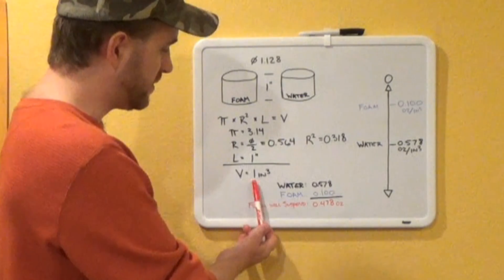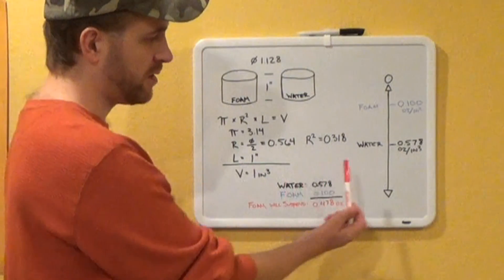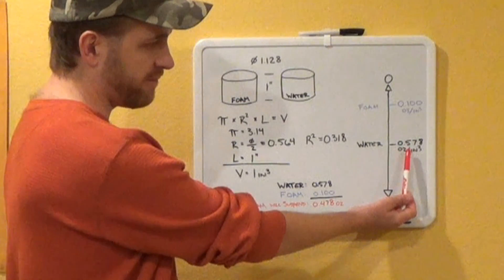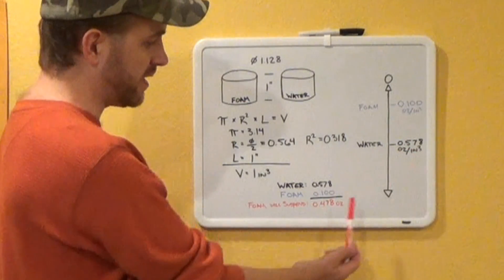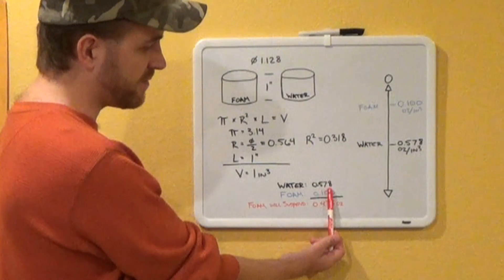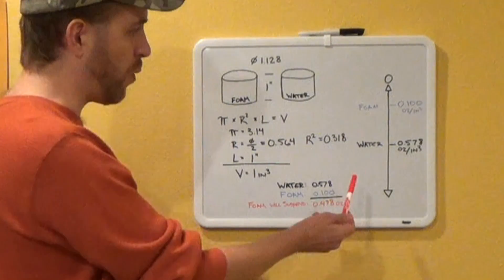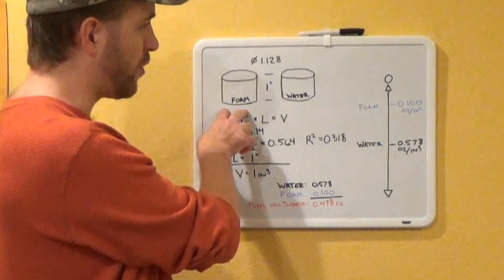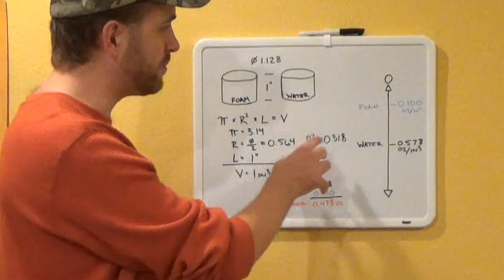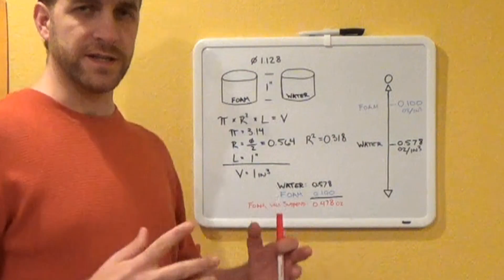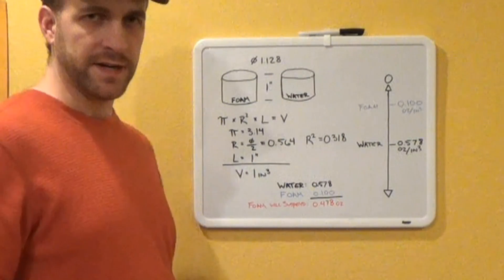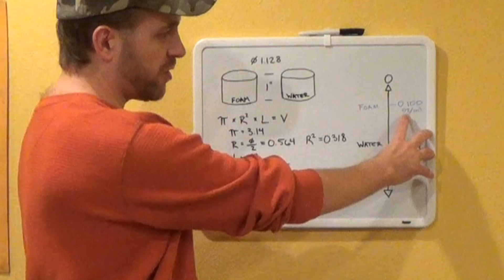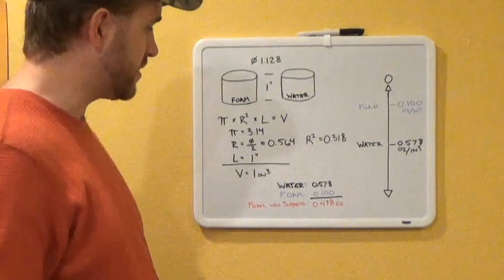So if we take our 1 cubic inch, multiply that times our 0.578 ounces per cubic inch, we get 0.578 for our water weight of that volume. On our left with our foam, same size, same volume, we have basically given the foam just a random density, simple number of 0.100 ounces per cubic inch.